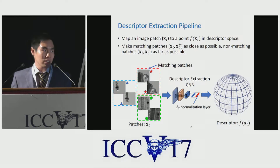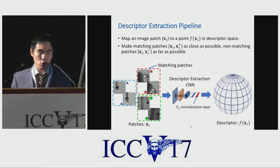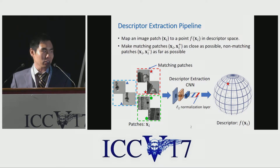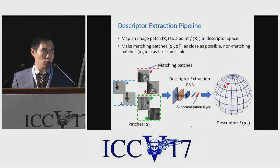What is descriptor extraction? Basically, we are trying to learn a model — here we use a deep convolutional network — trying to map an image patch to a point in the descriptor space. The goal of descriptor learning is to make the descriptor of matching patches as close as possible, and the descriptor of non-matching patches as far away as possible.